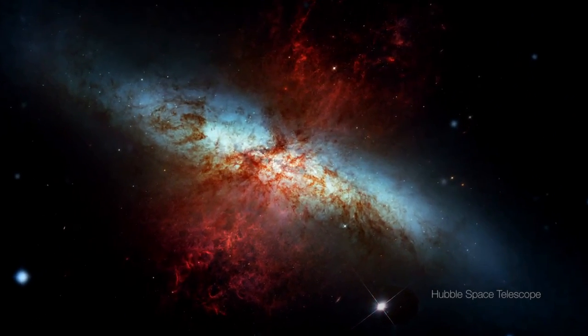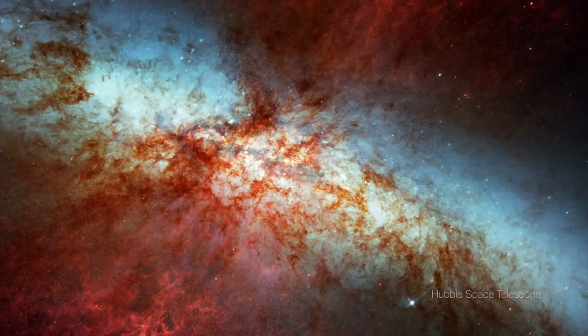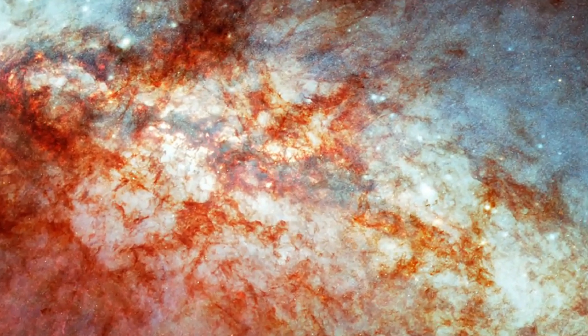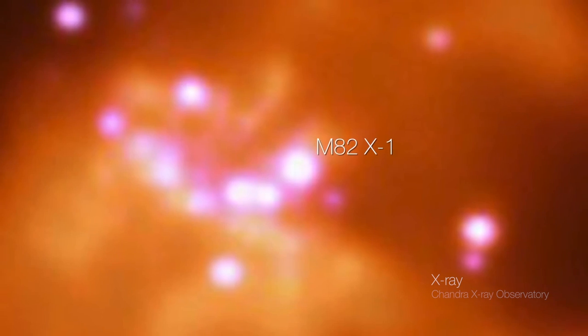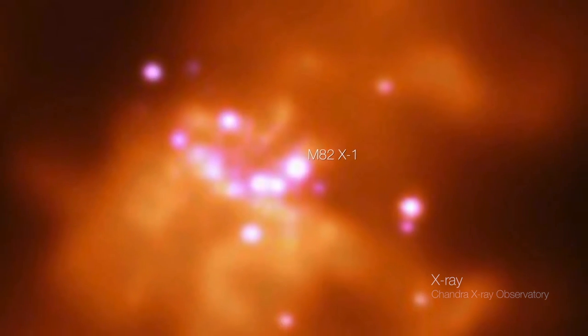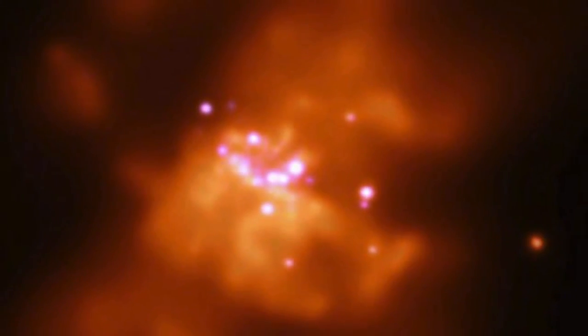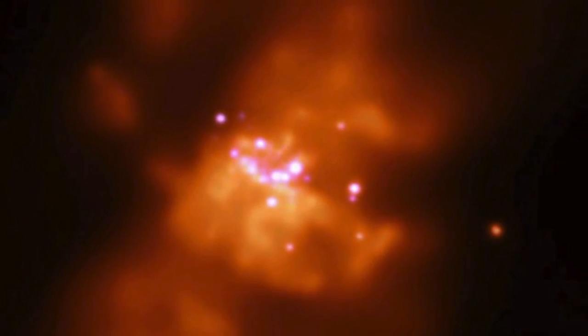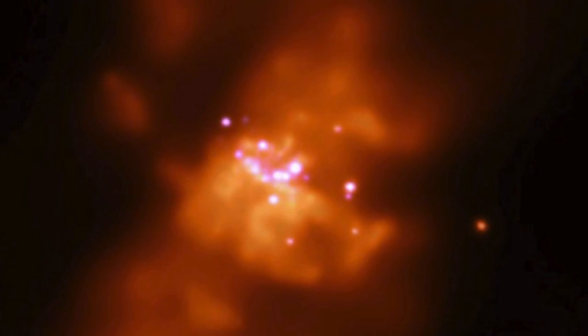Known as M82X1, the object is the galaxy's brightest X-ray source. It was long suspected of being an exceptional mid-sized black hole, too big to be made by a dying star, yet much smaller than the monsters found in the hearts of galaxies. But definitive evidence had never materialized.